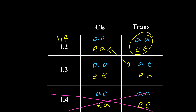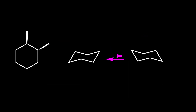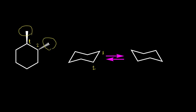Now we can convert a cyclohexane structure to the chair based on this table. Let's have some examples. The first example: we would like to convert trans-1,2-dimethylcyclohexane. I'll put numbers on these two carbons — these numbers are just a relative position, not the nomenclature numbering. So we have number one and two, and it is a trans isomer, meaning the two methyl groups should be on trans positions.